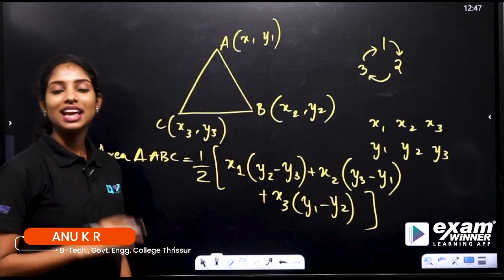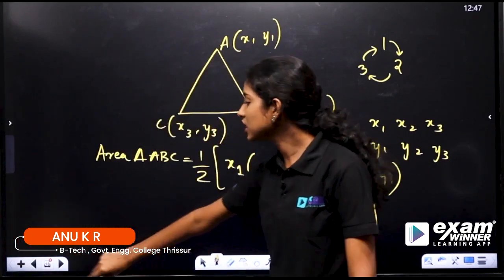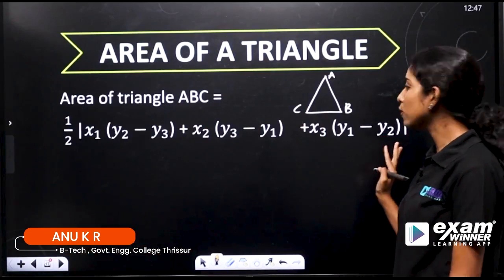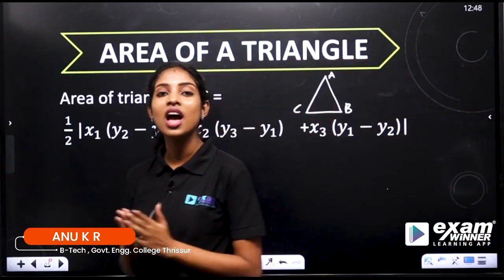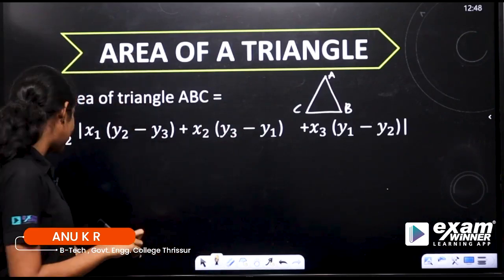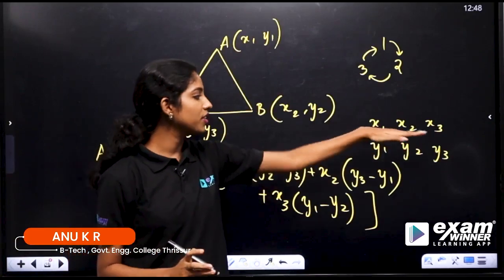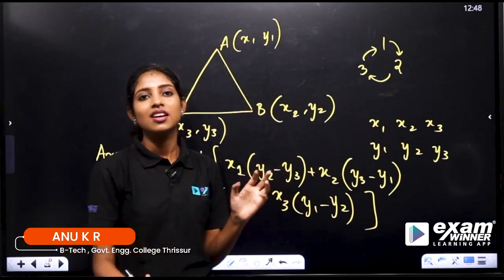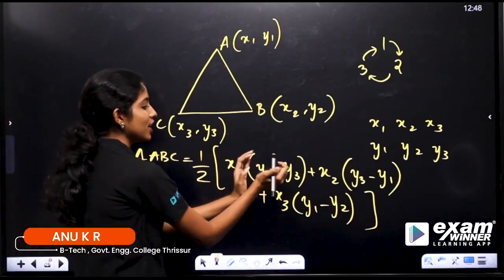This is the area of triangle equation. We will write it in cyclic form: x1 into y2 minus y3, then cyclically x2 and y3, x3 and y1.